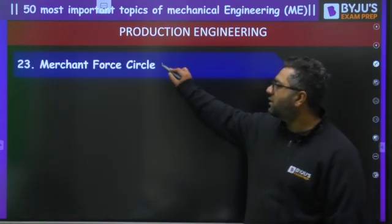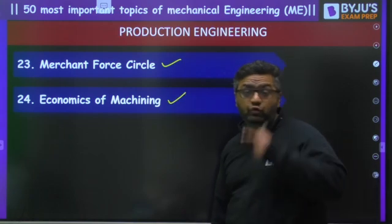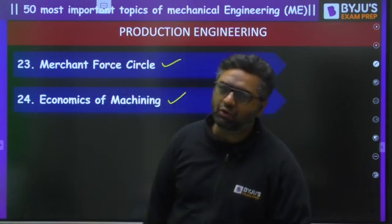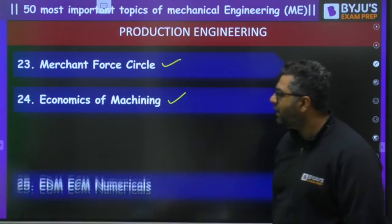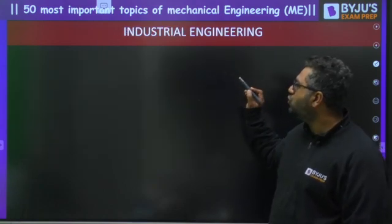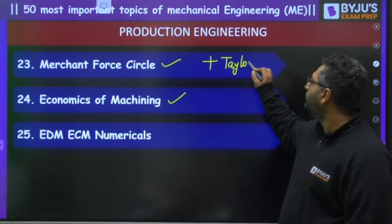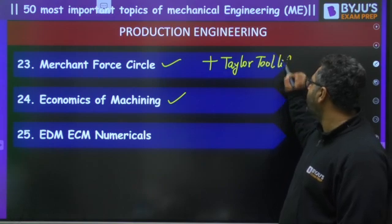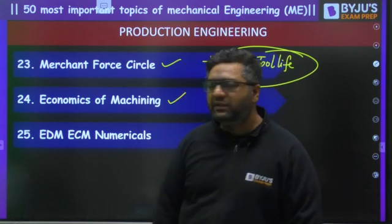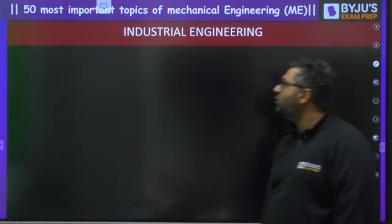In metal cutting: Merchant's Circle is a very important topic. Economics of machining — remember two formulas: one for maximum production criteria and the other for minimum cost criteria. Then EDM and ECM numerical formula-based questions. Also, Taylor's tool life equation is an all-time favorite of every examination. With this, we have covered 25 topics from the top three subjects.